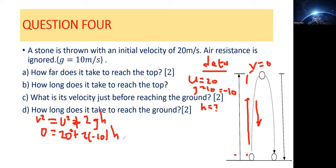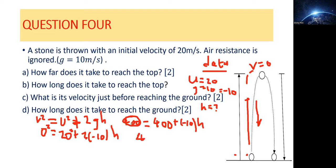20 squared — when you multiply 20 by 20 that's 400. So we have zero squared, which is zero, equals 400 plus two times negative 10, which is negative 20, times h. We collect like terms — we can't add 400 and h since they're not like terms — so 400 moves to the other side, giving us negative 400 equals negative 20h.